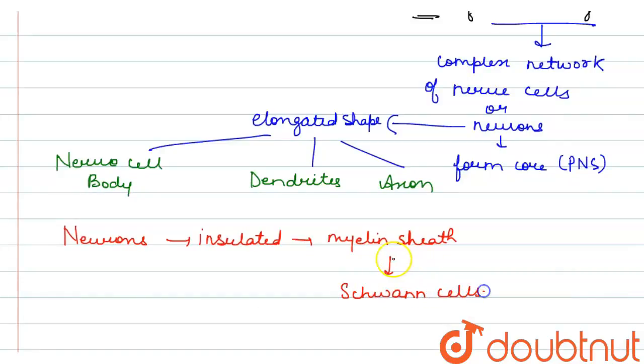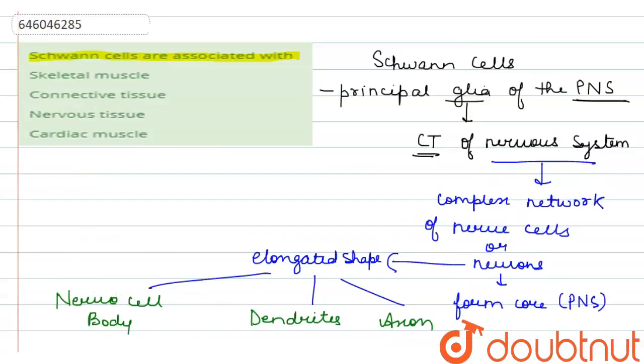Now this myelin sheath is present in the neurons, and neurons are present in the nervous system. Hence we can say that option number three is correct—Schwann cells are associated with nervous tissue. I hope I have solved the question. Thank you.